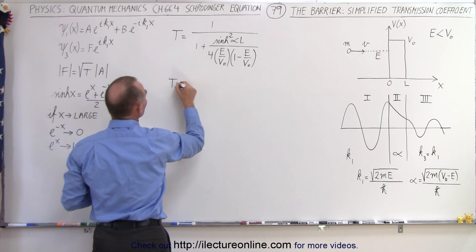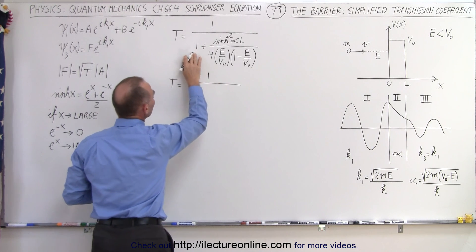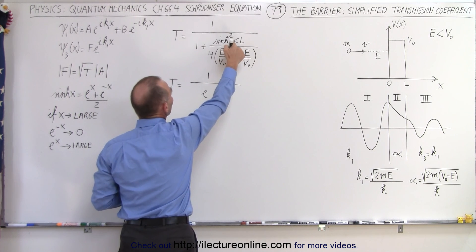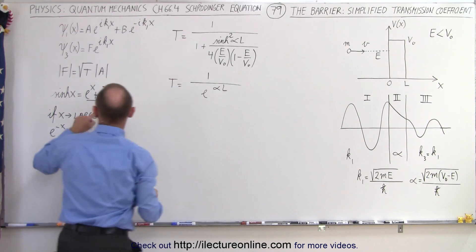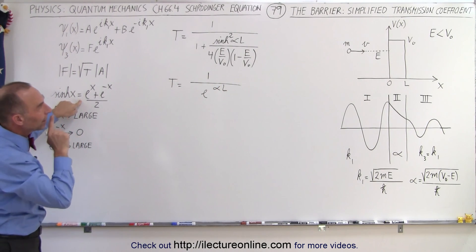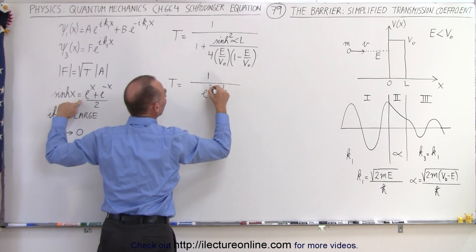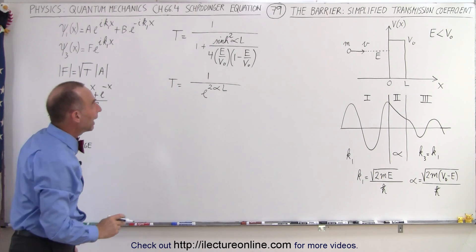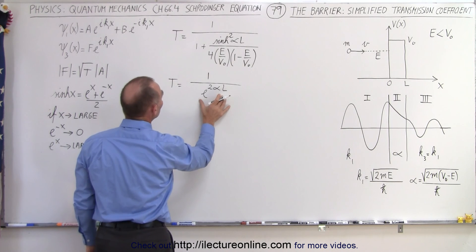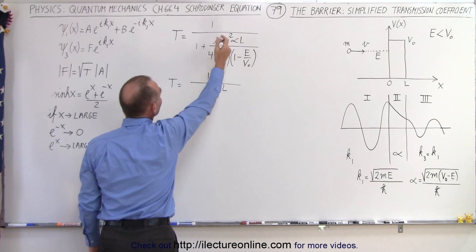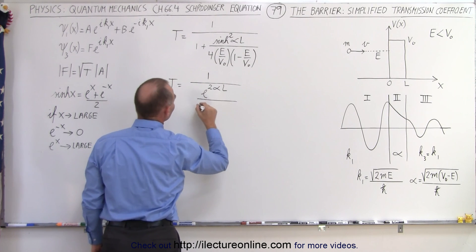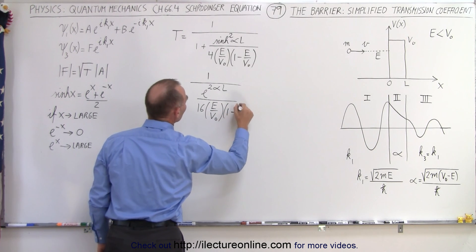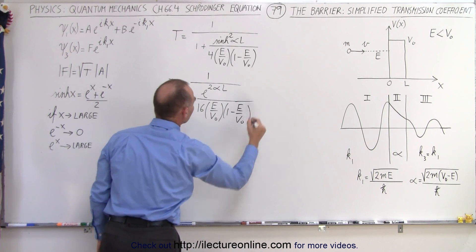So then the transmission coefficient becomes equal to 1 divided by, the 1 is now gone. In the numerator here, we're going to end up with e to the x. Now e to the x is, of course, e to the alpha times L. That comes from here, and because this is squared, we have to put a 2 there because we're going to square that, and square e to the alpha L becomes e to the 2 alpha L, and we have to divide that by 2. Now divide by 2, and we square that, that divides by 4, so we end up with 16. That becomes E over V naught times 1 minus E over V naught.